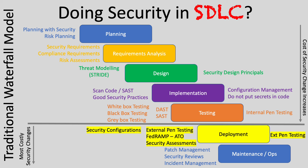From a security perspective, if we're not involved earlier on, the cost increases when we want to make a change. For example, if during implementation they built all the code and then we realized something was missed during threat modeling, we'd have to go back into the design and implementation phases to incorporate the fix. As we move down the software development lifecycle, the cost of change becomes exponentially more once we move from the testing phase to the deployment phase — that's where costs drastically increase.